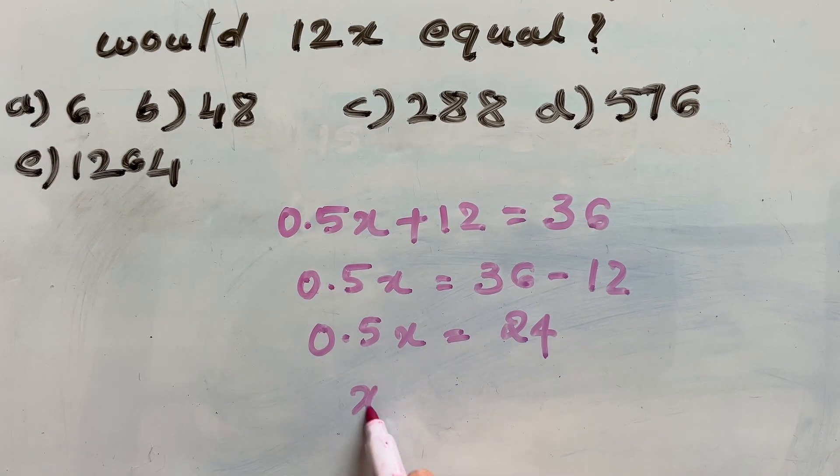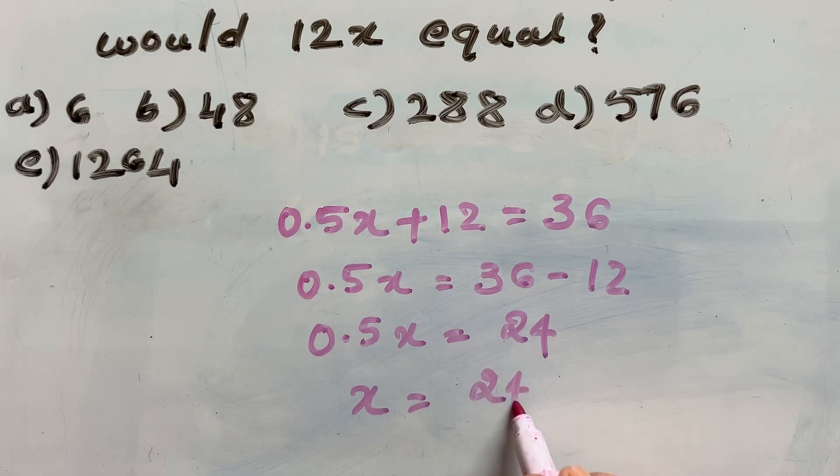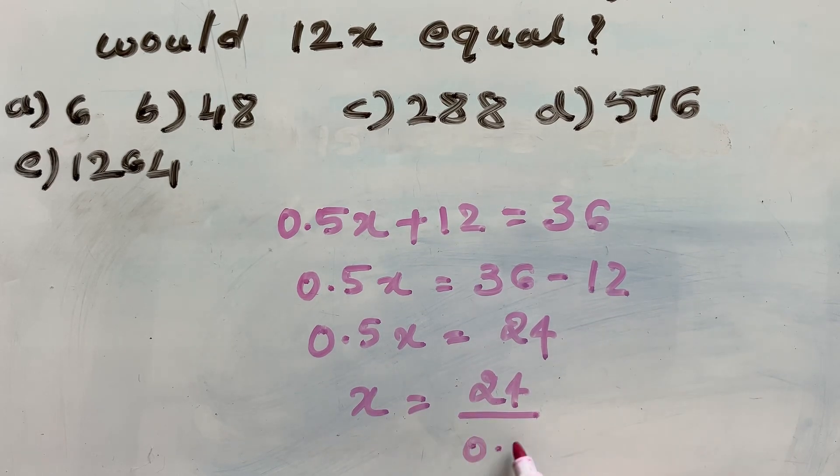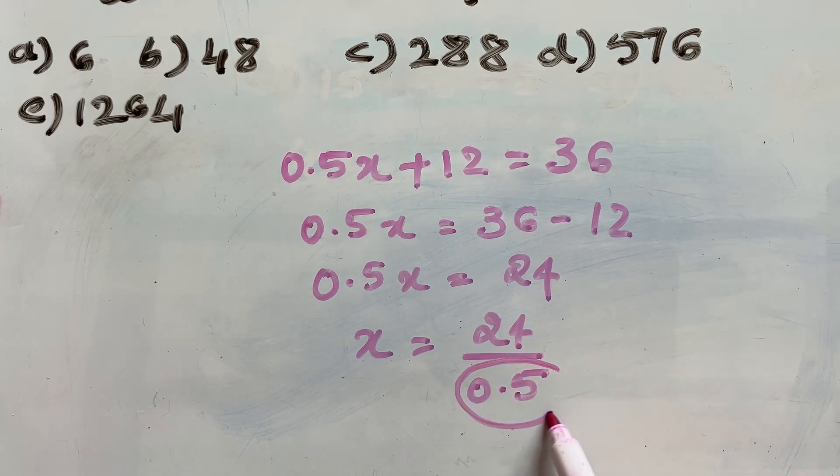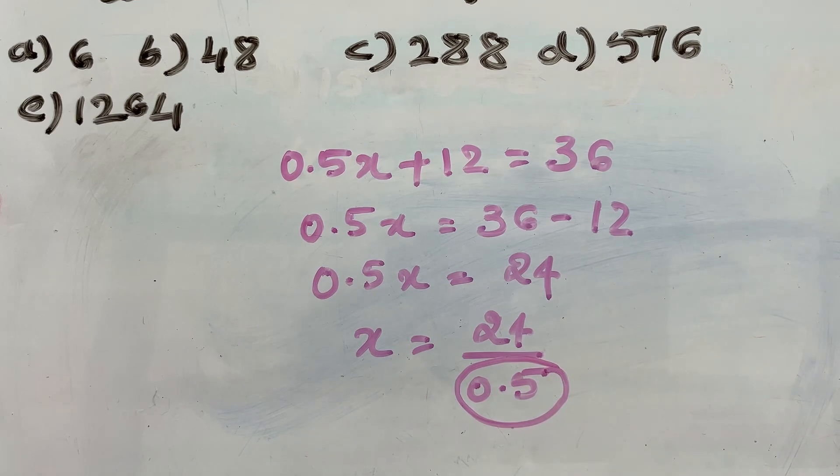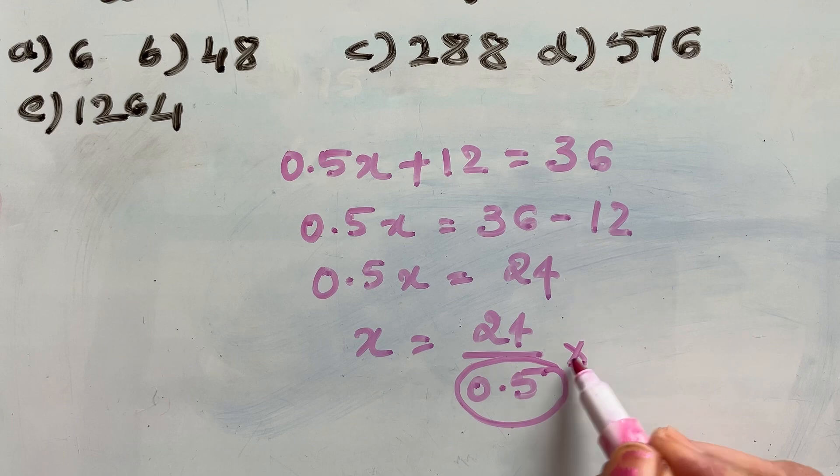Now x is equal to 24 divided by 0.5. Now I don't want a decimal here in the denominator, so I multiply both numerator and denominator by 10.